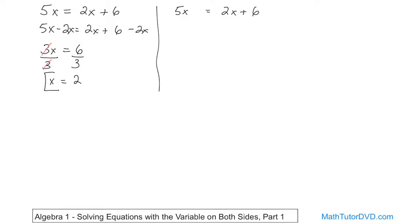If we want to get rid of the 5x on the left, we subtract 5x from both sides. On the left-hand side, 5x minus 5x gives you 0. On the right-hand side, you have 2x minus 5x. That's 2 minus 5, which gives you negative 3x. You can convince yourself: 5 minus 2 is 3, and the sign goes with the larger absolute value. So you have negative 3x plus 6.